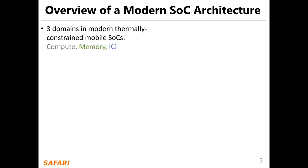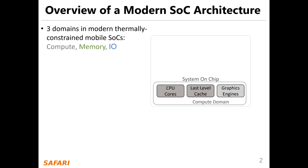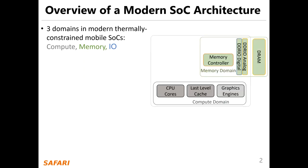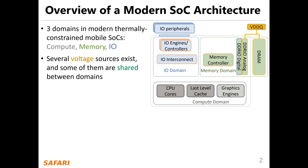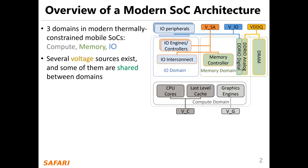In modern thermal-constrained mobile SOCs, there are three domains: compute, memory, and IO. Several voltage sources exist, and some of them are shared between domains — for example, VDDQ, VIO, V-System Agent, V-Core, and V-Graphics.